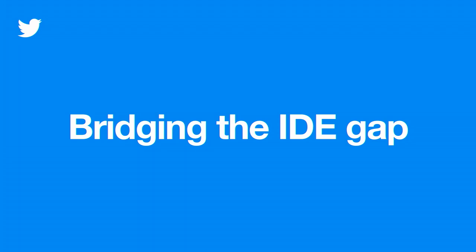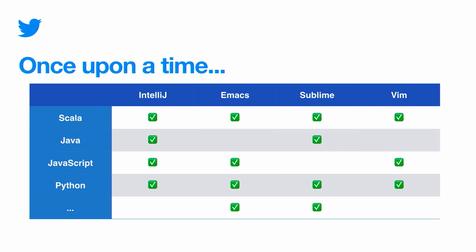I want to talk about bridging the IDE gap. Once upon a time — and it's not really that long ago, maybe five years ago — if you were doing language tooling, say you were a compiler author of a new programming language, and you wanted code completions working in IntelliJ, Vim, and Sublime, you'd end up doing a custom integration for each editor. As you can imagine, there would be holes in this matrix of support — some editors did not work with some languages, and usually IntelliJ just had support for everything.